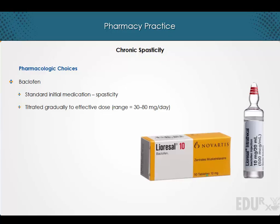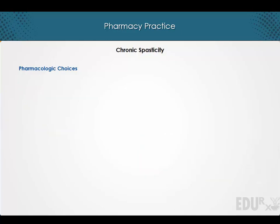Baclofen is the standard initial medication for spasticity. It must be titrated gradually to an effective dose, typically in the range of 30 to 80 mg a day. Note that adverse effects such as sedation can limit the use of baclofen in patients who are brain injured.